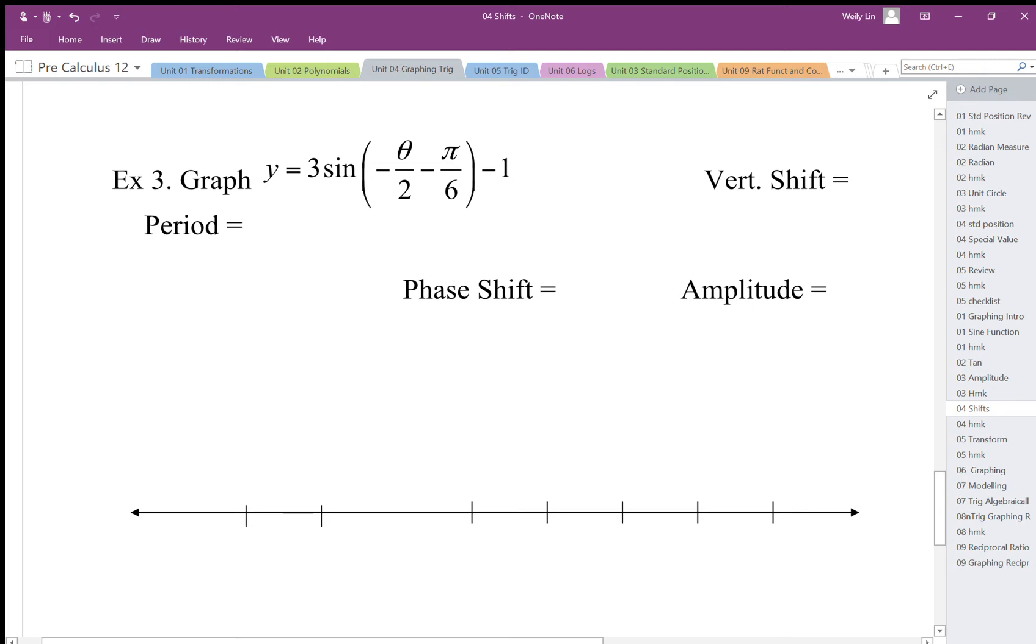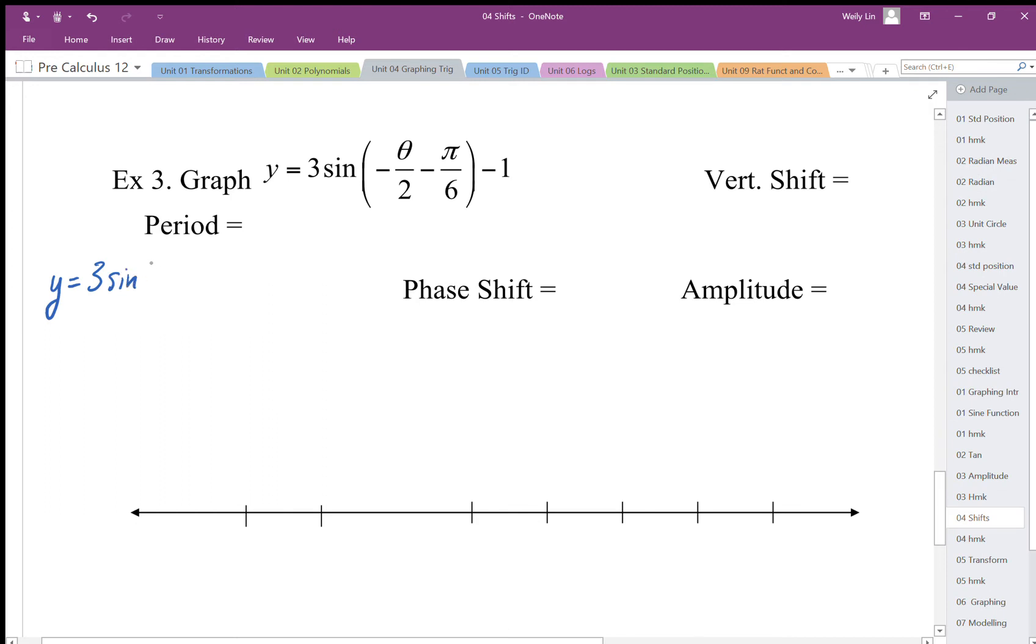Okay, so the factored form of this should look like this. Okay, there's my factored form. What is the vertical shift of this function? Down one. What's the amplitude? The amplitude? Three.